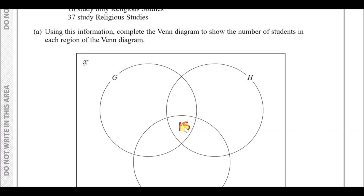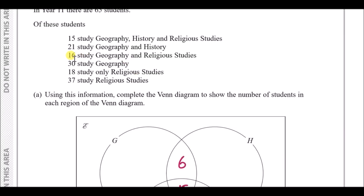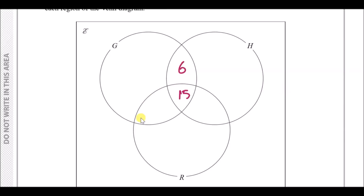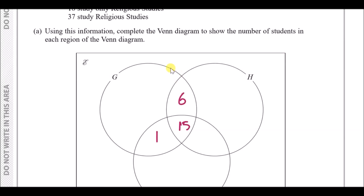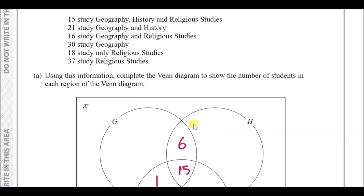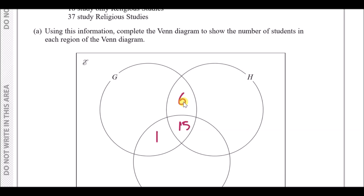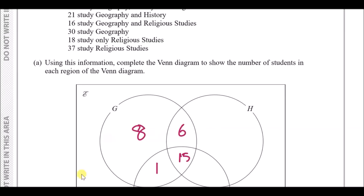21 studied geography and history, so in that intersection we already have 15, leaving 6. 16 studied geography and religious studies, so 15 plus 1 equals 16, giving 1 in that region. 30 studied geography overall, and 6 + 15 + 1 = 22, so there are 8 remaining in the geography-only region.